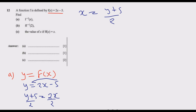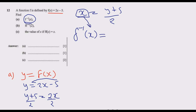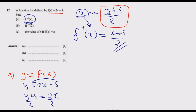Once we have x = (y + 5) / 2, we replace x with f⁻¹(x) and replace y with x, because it is a function of x. So our inverse function is f⁻¹(x) = (x + 5) / 2. This is how you answer part a to get the one mark.